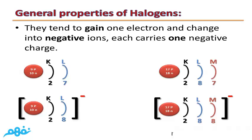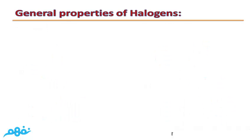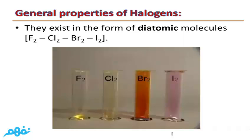The third property is that halogens exist in the form of diatomic molecules, meaning each molecule of a halogen consists of two atoms — such as F₂, Cl₂, Br₂, and I₂.